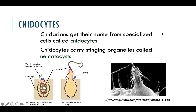Cnidarians get their name because they have specialized cells called cnidocytes. The entire cell is a cnidocyte, and inside we have a nematocyst. The nematocyst is the actual stinging organelle that shoots out — it has its little barb and thread — and that is the self-defense mechanism that jellyfish have. That's why they sting.